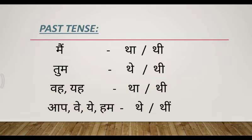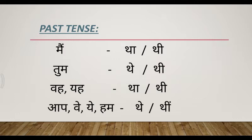Next, third person singular. Voh and yeh — already you know — voh means 'that,' yeh means 'this.' He or she. For masculine use tha, for feminine use thi. Example: voh ladka maidan mein tha — that boy was in the ground. Yeh ladki nadi mein thi — that girl was in the river. Like this we can use tha and thi for third person singular.